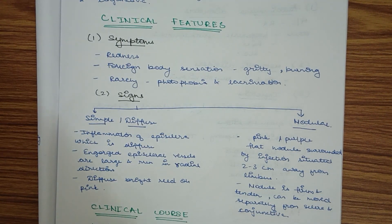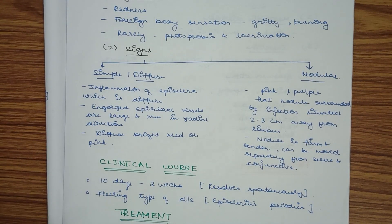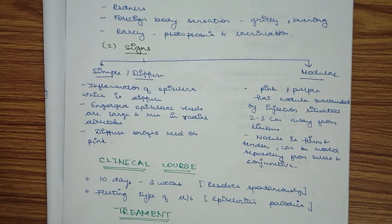Episcleritis may be simple or diffuse, or nodular. In simple or diffuse episcleritis, there is diffuse inflammation of the episclera. The episcleral vessels become engorged, large, and run in radial directions, causing the whole eye to appear bright red or pink.